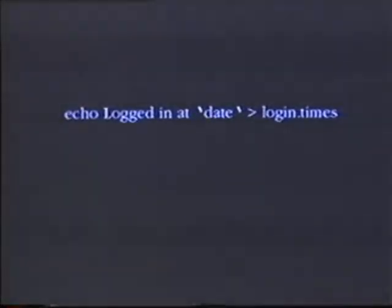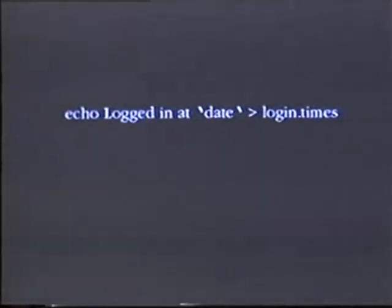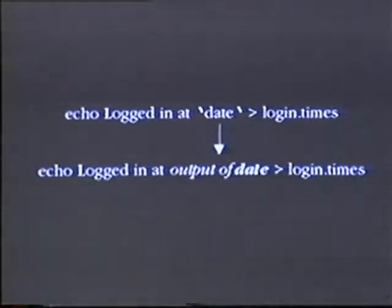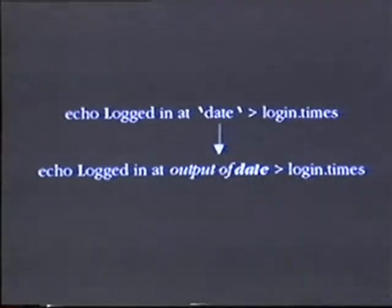In order to print arguments into a file, I use a special UNIX command called echo. What I want to do is echo out the message 'logged in at' and then the output of the date command. Using the back quotes, I can tell the shell to execute the date command, take the output of the date command, and send that with the other command line arguments to the echo command, putting the whole thing into the login.times file. Note that the date command is enclosed inside back quotes — that gets executed first. The output of date is then combined with the words 'logged in at', and all of those are sent as arguments to the echo command, which sends all its output into the redirected file login.times.